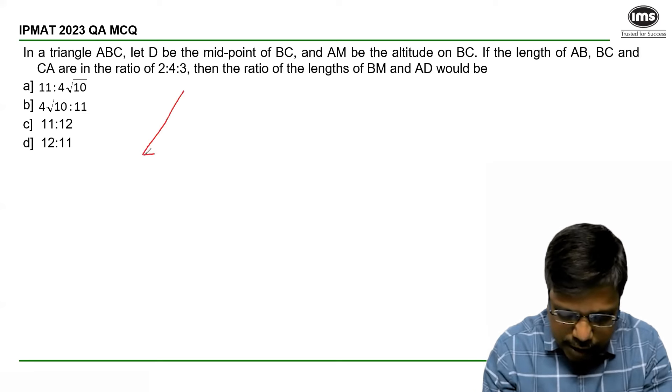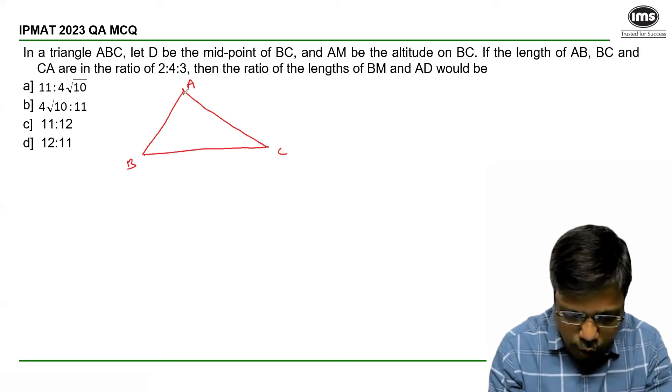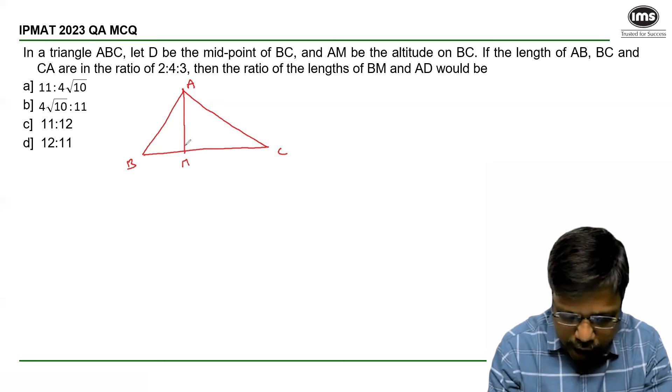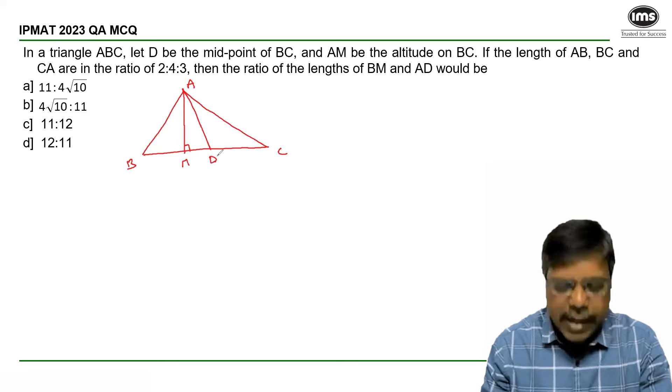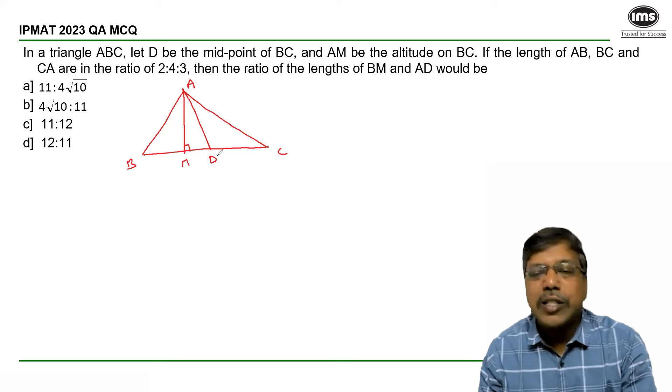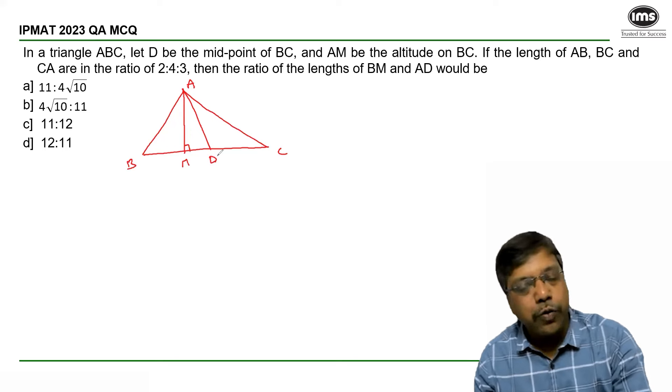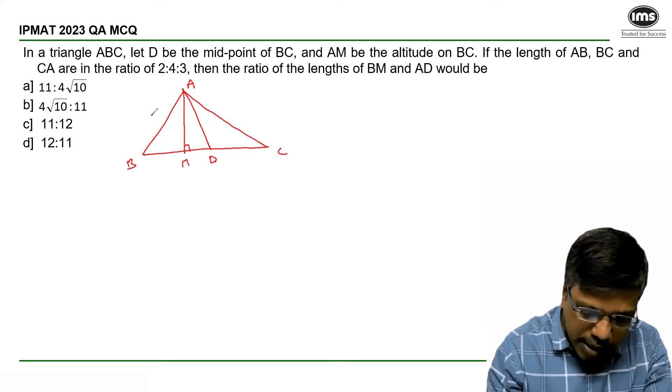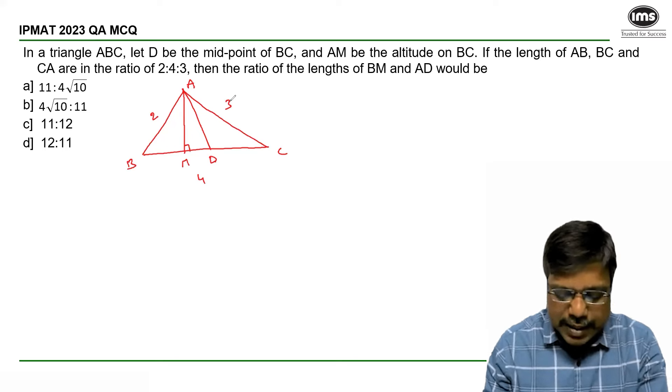Consider the triangle ABC. AM is the altitude and AD is the median because D is the midpoint. The sides are in the ratio 2 is to 4 is to 3. So let this side be 2 units, this side is 4, and this side is 3.